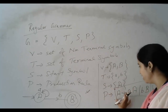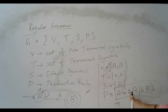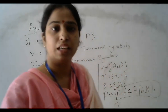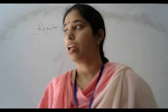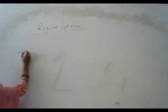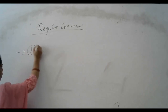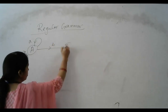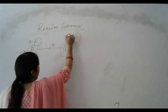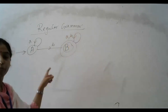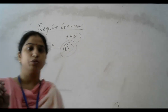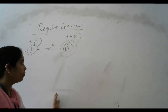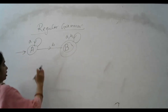This grammar contains non-terminals, terminals, start symbol, and production rule. Now continuing with an example: we have one finite state machine with states A and B, where B is a final state. The question is: construct a regular grammar for the given finite state machine.